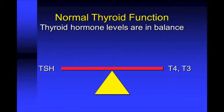Another way we can think about this relationship is to think about thyroid hormone and TSH as being like children sitting at opposite ends of a teeter-totter. When all of their values are normal, the hormones will be in balance with one another.